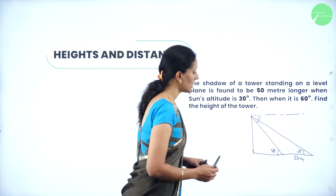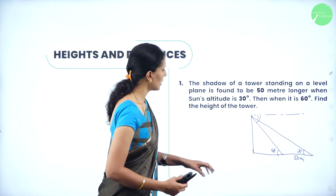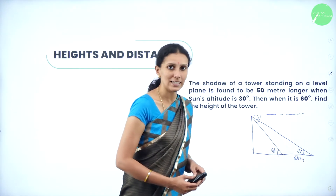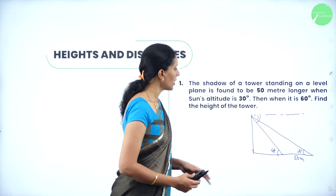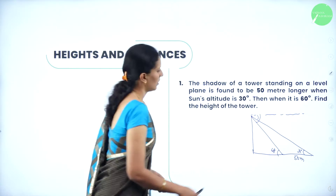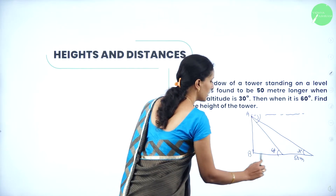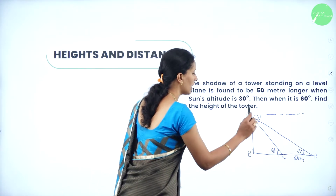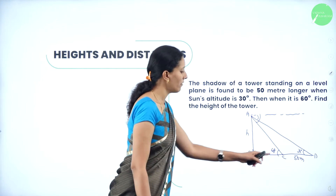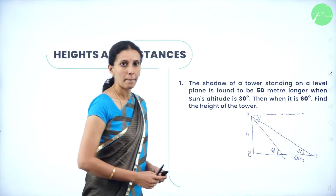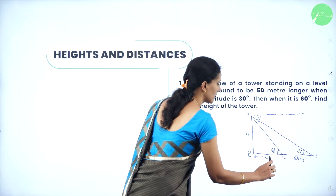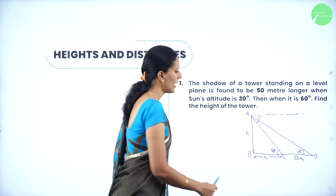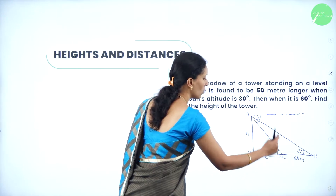We are writing the alternate angles here. The tower has a shadow which is 50 meters longer when the sun's altitude was 60 degrees compared to 30 degrees. We need to find the height of this tower. Let's take the points as A, B, C, and D. Let the height of the tower be H. We have an unknown length — let it be BC, which I will consider as X. This is the total shadow when the sun's altitude was 30 degrees, and this is the shadow when the angle was 60 degrees.